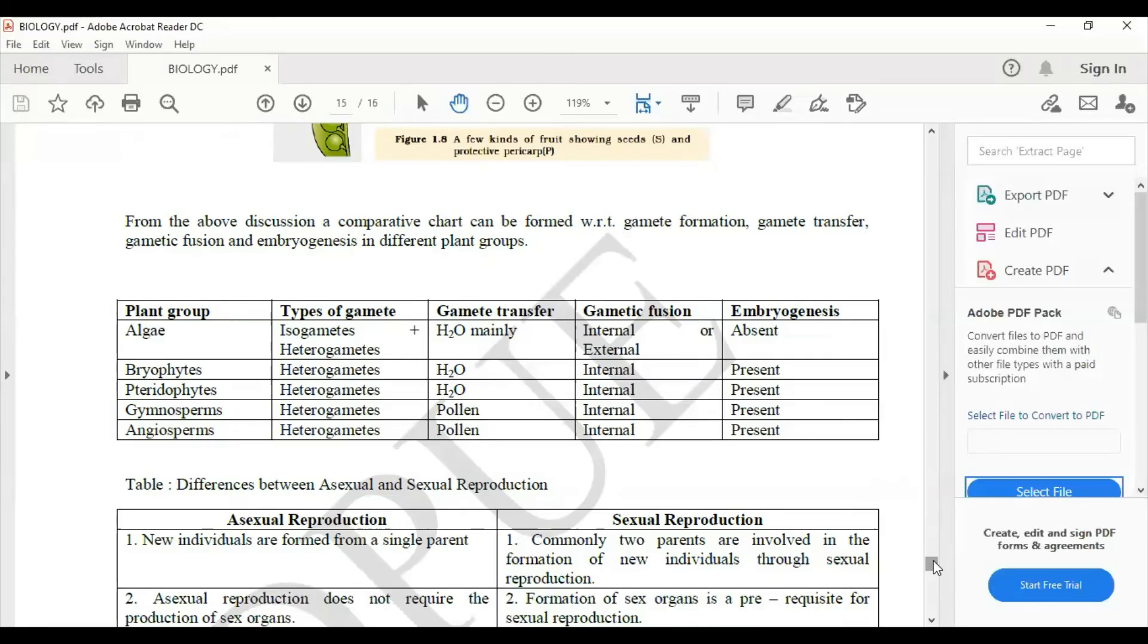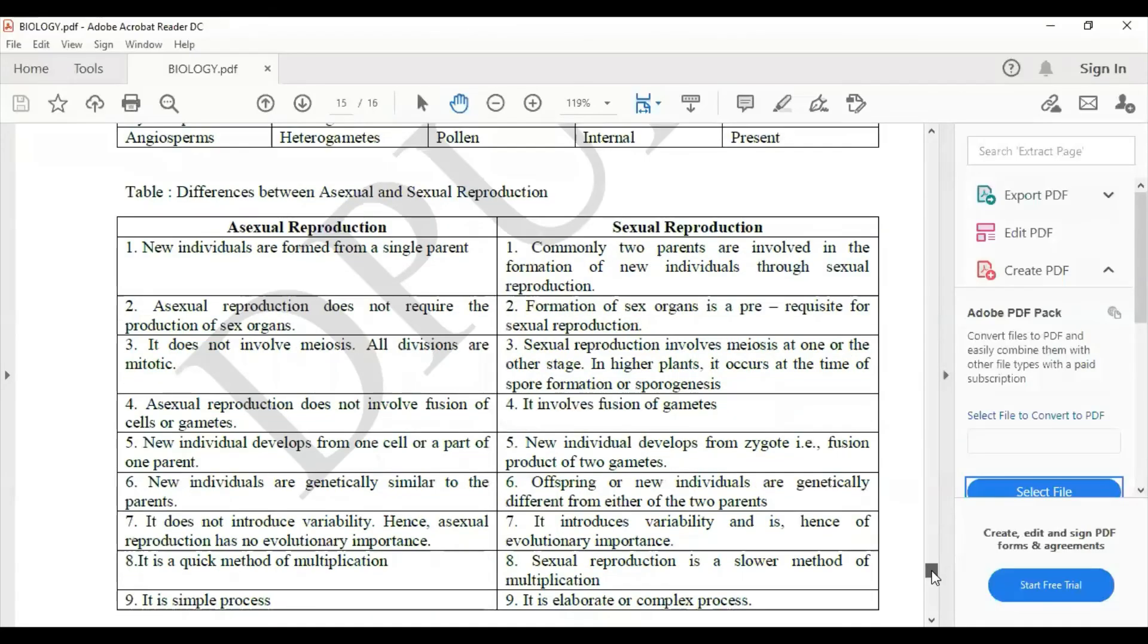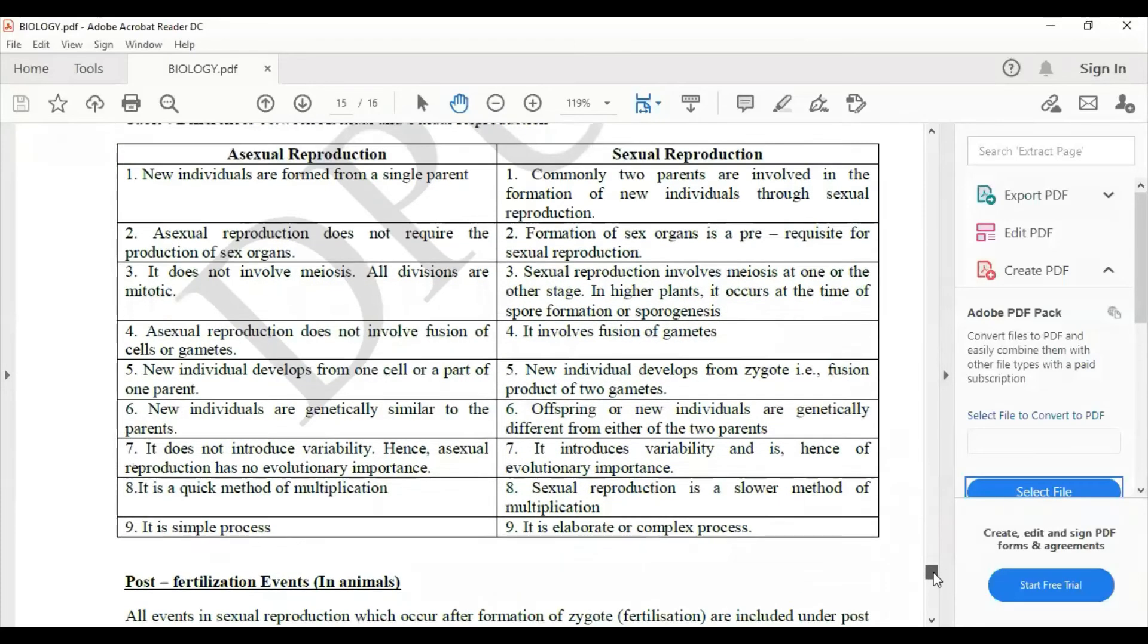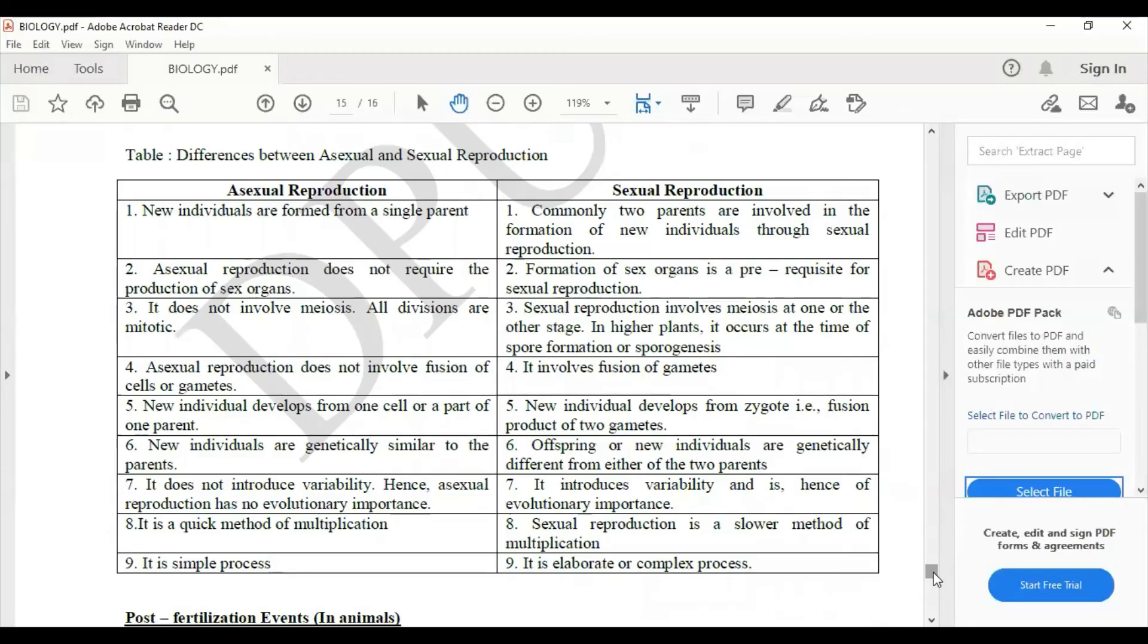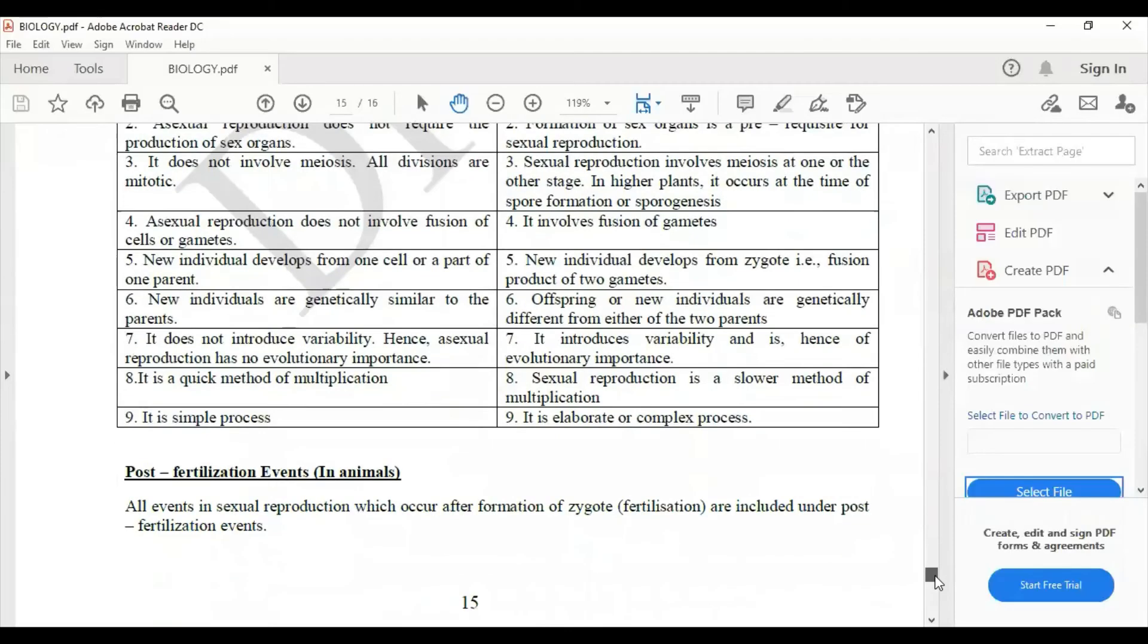And then embryogenesis, how embryogenesis is happening. So this is the chart explaining the types of gamete and transfer in fusion. The next table talks about the difference between asexual reproduction and sexual reproduction.